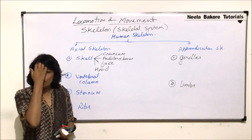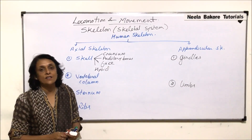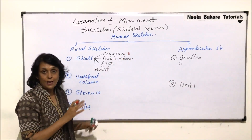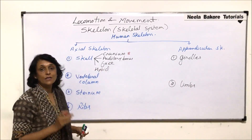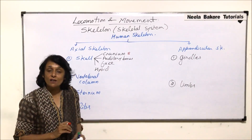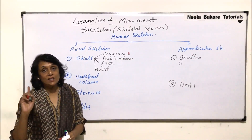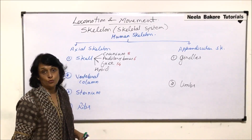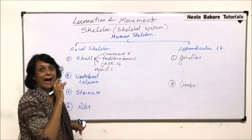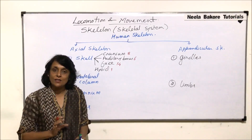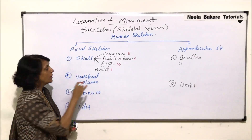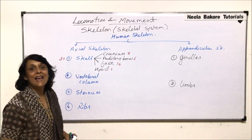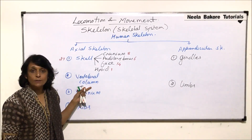Let us write down the number of bones in each part of the skull. The cranium is made up of eight bones. The auditory bones — malleus, incus, and stapes — are three in each middle ear, giving six in total. The face is made up of fourteen bones, and there is only one hyoid bone just beneath the tongue. Adding these: fourteen plus six is twenty, plus eight is twenty-eight, plus one gives a skull total of twenty-nine bones.